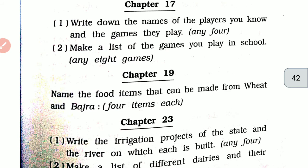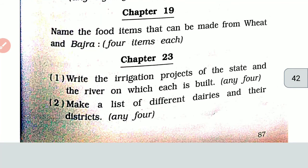Chapter 19. Name the food items that can be made from wheat and bajra. Food items made from bajra: rotla, dhira, vada, cooler, and laddus. Food items made from wheat: rotis, phakris, puris, pira, lapsi, cooler, and laddus can also be made from wheat.